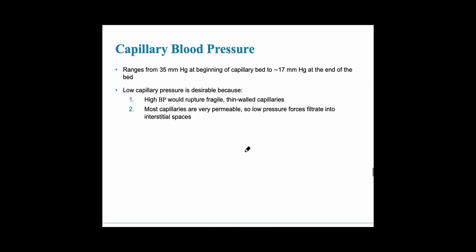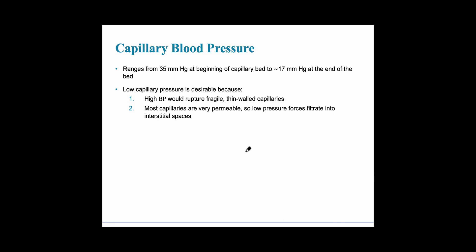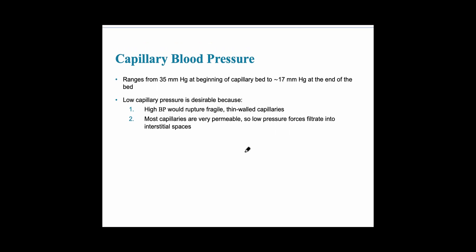Capillary blood pressure is much lower because this is where oxygen and nutrients are exchanged. Blood pressure in the capillary ranges from 35 mmHg at the beginning of the capillary bed to 17 mmHg at the end. We need this low blood pressure because if we don't, the thin-walled capillary walls could rupture. Capillaries are unique in that they only have the tunica intima, unlike arteries and veins.